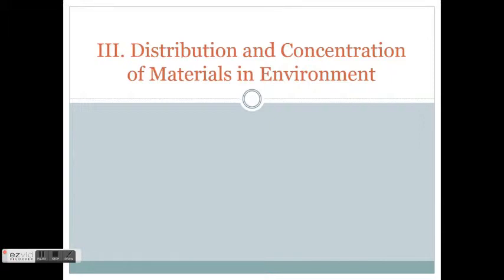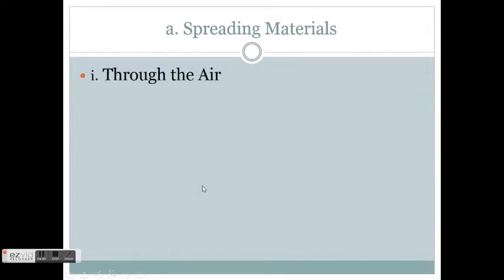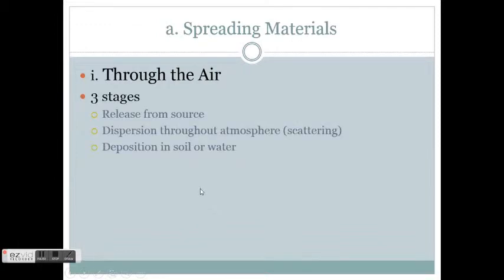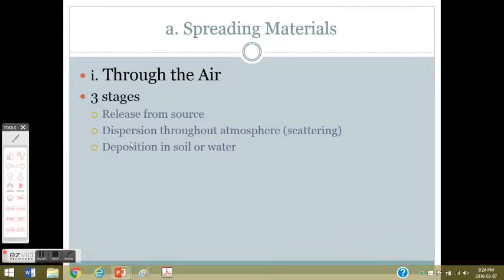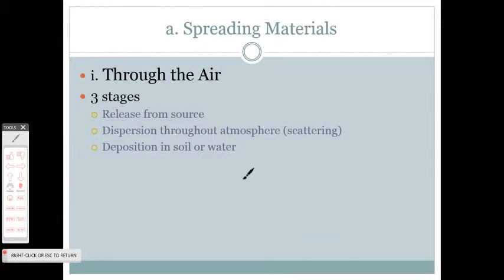Here we're going to talk specifically about: if something has got to the environment, what's it going to do? First of all, materials can be spread — there are different ways of doing that. One way is through the air. There are three stages: release from the source, dispersion through the atmosphere — so it's scattering — and then finally it comes floating down or raining down and is deposited in the soil or the water.